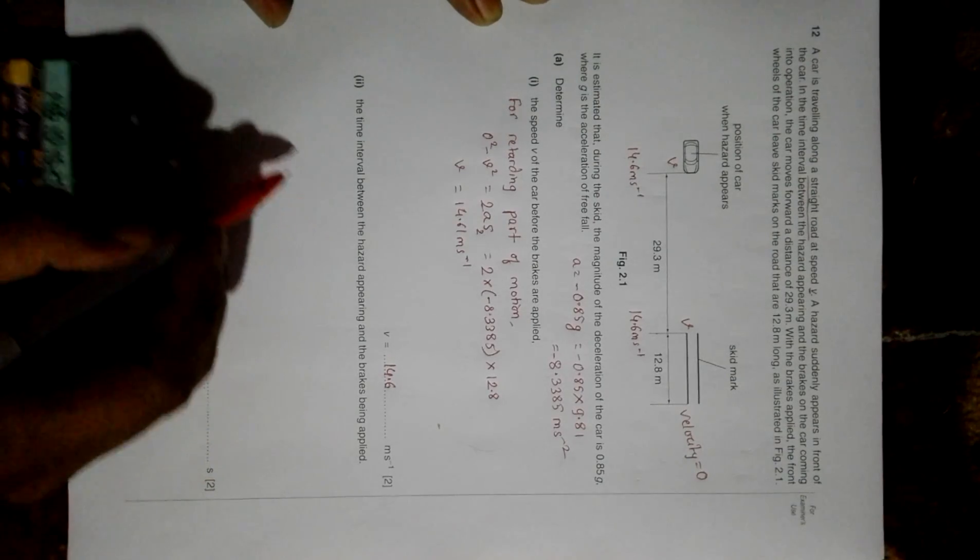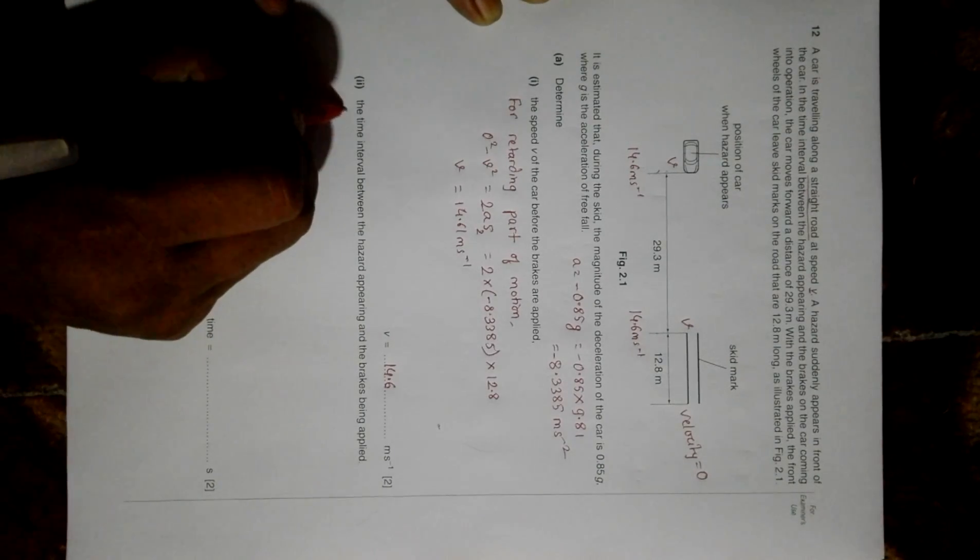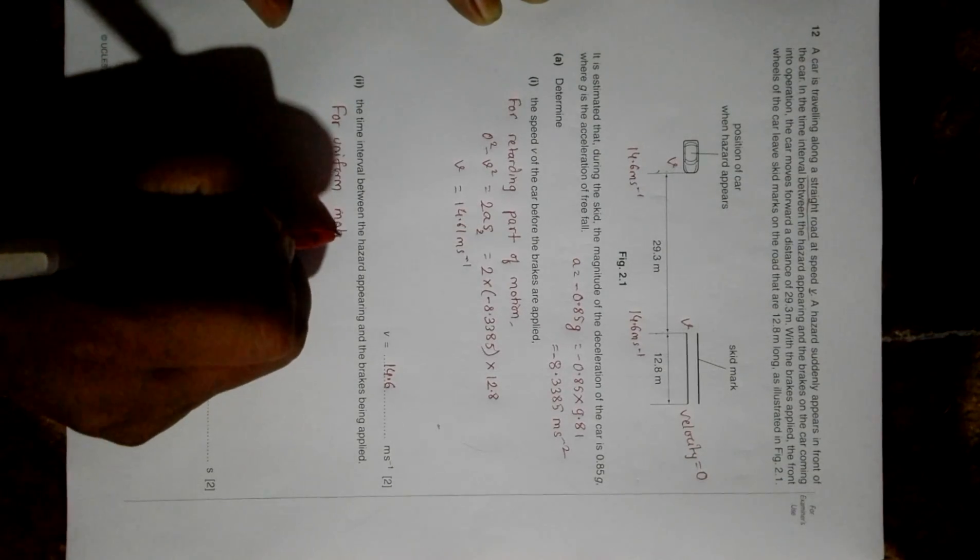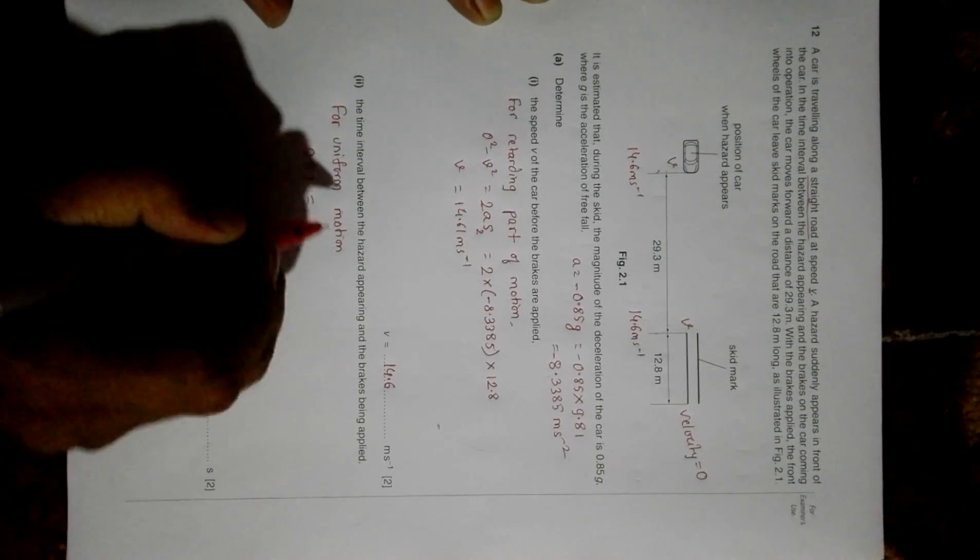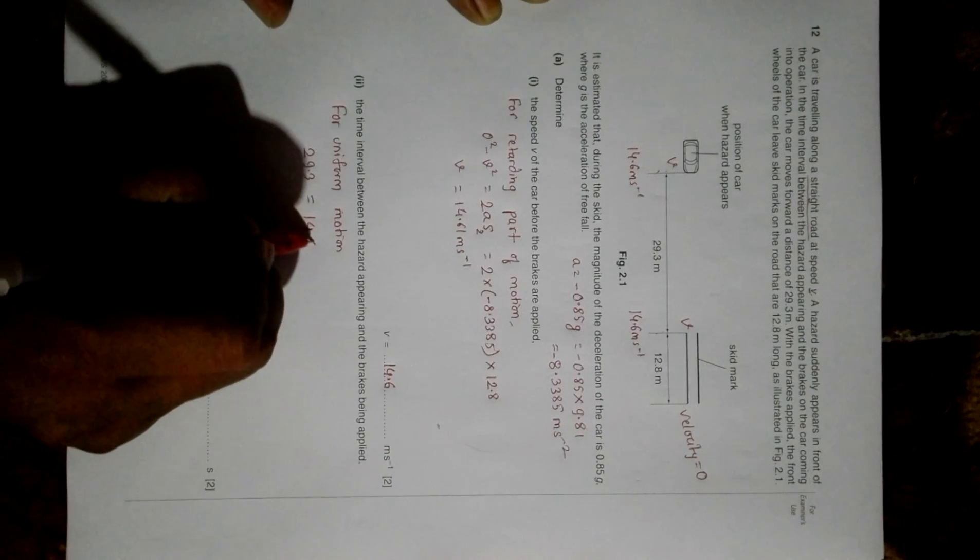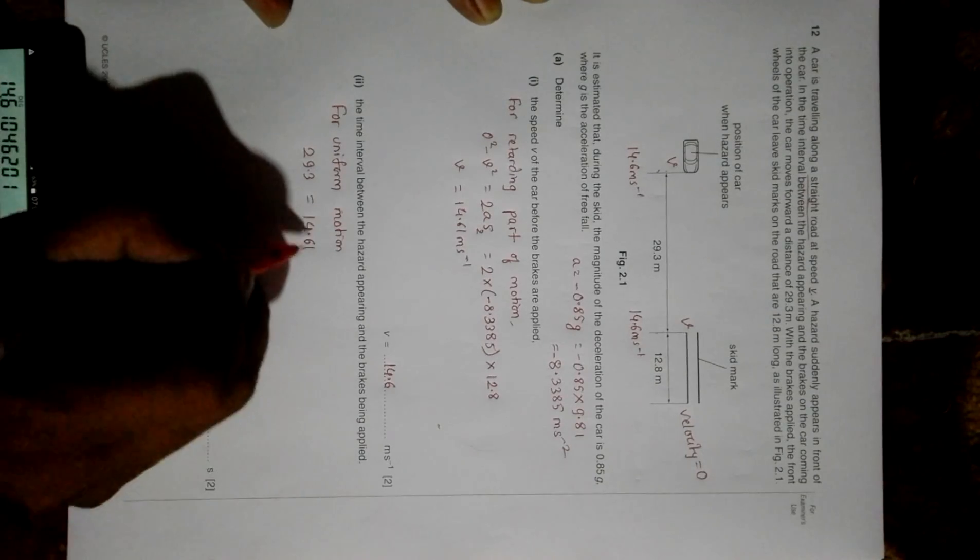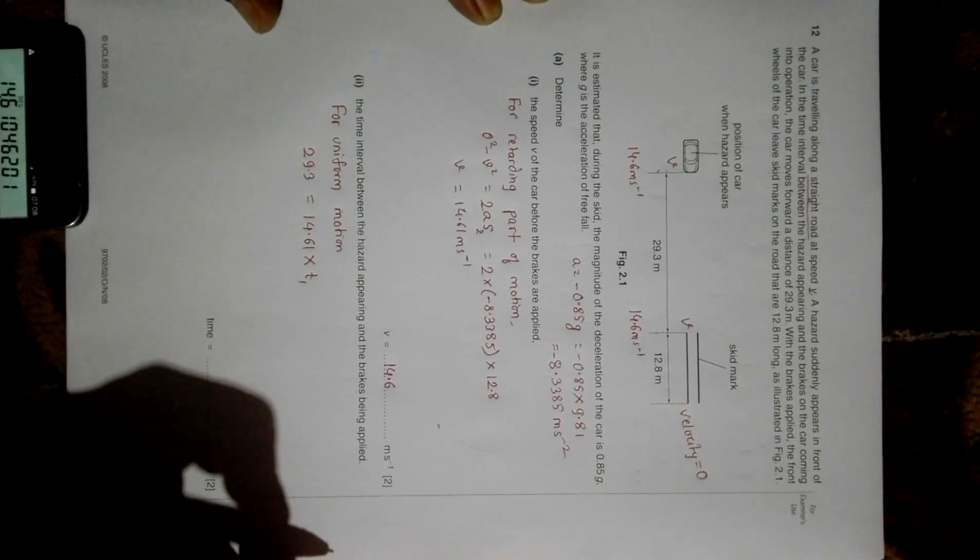Now we have to find the time interval between the hazard appearing and the brakes being applied. Since there is uniform motion from here to here, for uniform motion the distance of 9.3 meters should equal the uniform velocity of 14.61 into this time. Let's name it as t1.